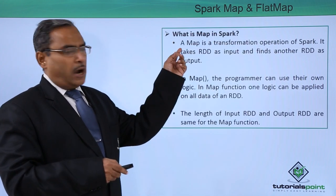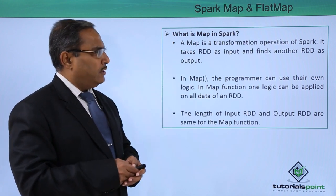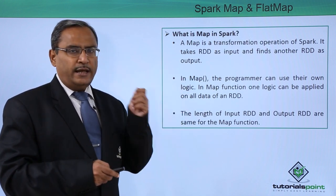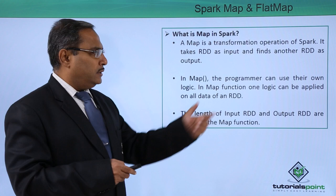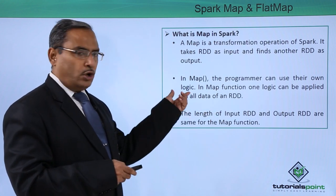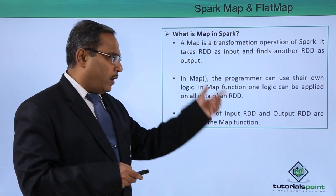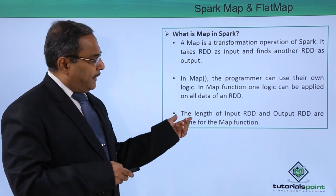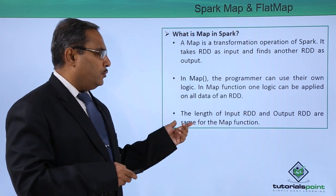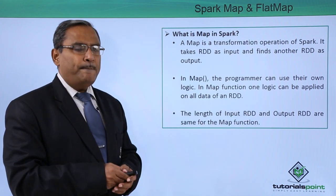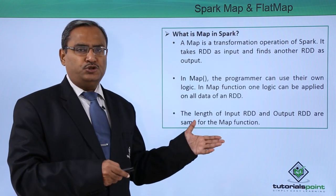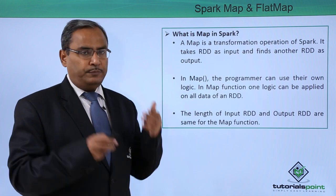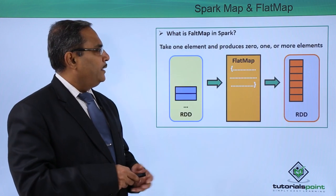What is map in Spark? A map is a transformation operation of Spark. It takes RDD as input and produces another RDD as output. In the map method, the programmer can use their own logic, and that logic will be applied to all data of the RDD. The length of the input RDD and output RDD are the same in case of the map function.